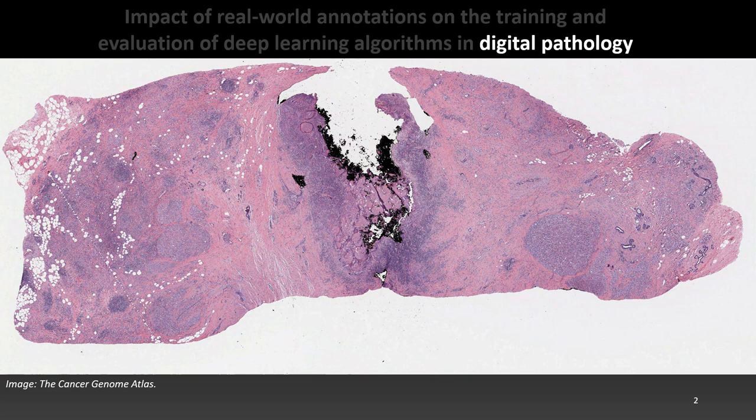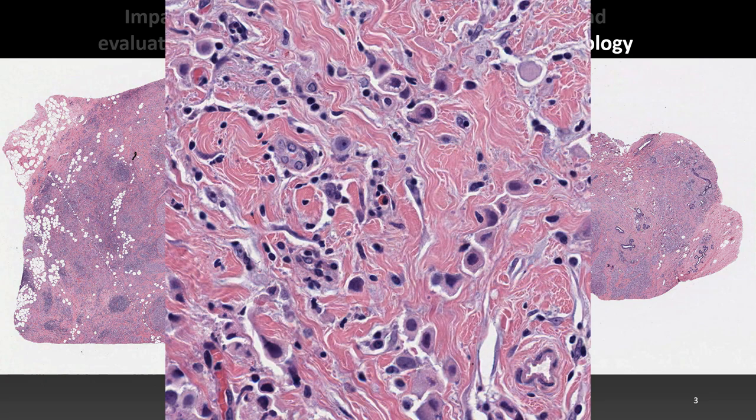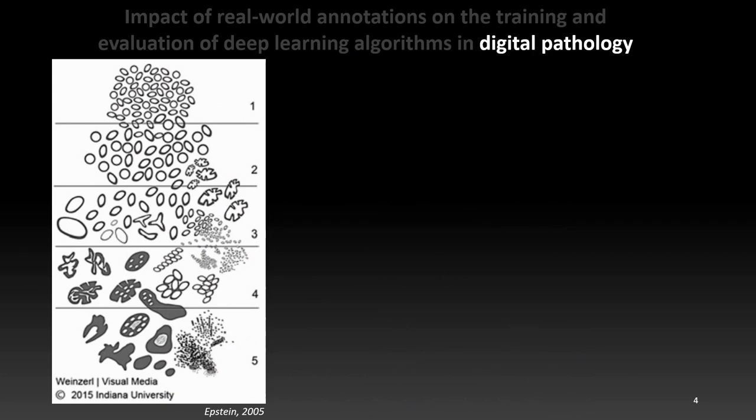These images are typically huge. From this relatively low magnification view, we can zoom in all the way to the level of the cell nuclei. What are pathologists looking for in those images?